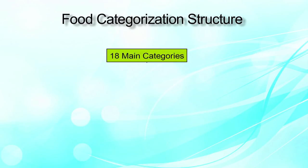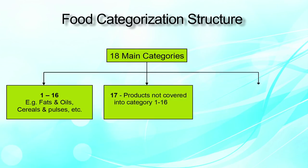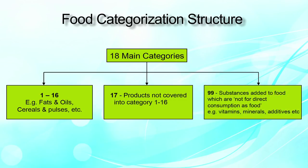There are total 18 categories. Category number 1 to category number 16 describes the various foods which include fats and oils, dairy, fruits, vegetables and so forth. Category number 17 covers categories not included in 1 to 16, and is kept for innovation. Category number 99 covers substances which are added into the food as additives. So there are total 18 categories — we will now see what those 18 categories are.